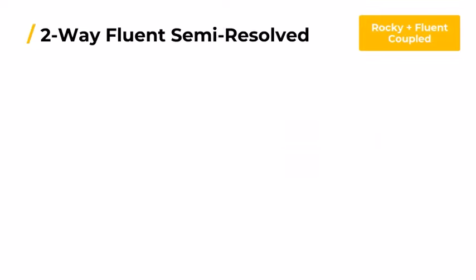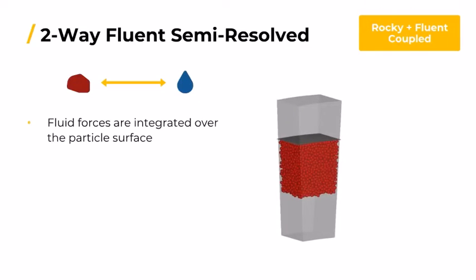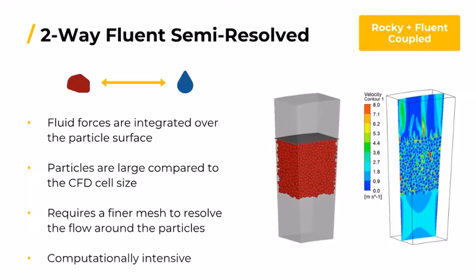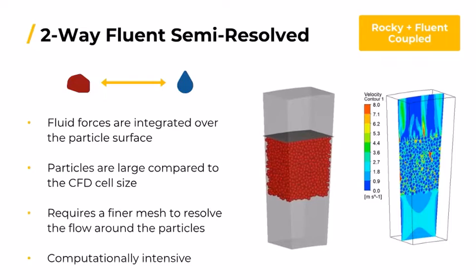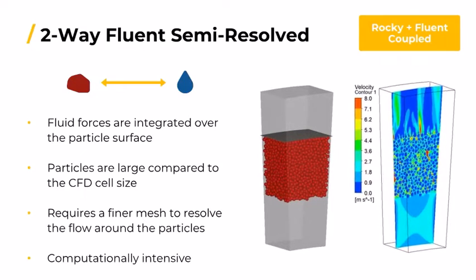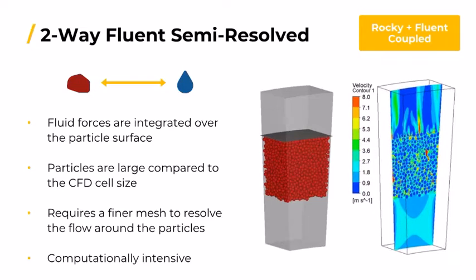Another two-way method is the two-way Fluent semi-resolved, which solves cases where the resolution of the fluid flow around the particles is critical to capturing the behavior of the particles or their effect on the flow itself. It requires a fine mesh in order to properly capture flow properties on the particle surface. The finer the mesh resolution, the more accurate the results, but also the more computationally expensive the simulation.